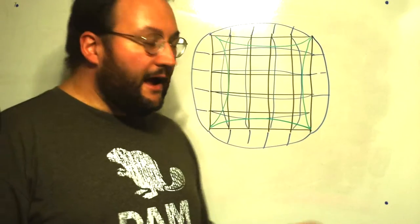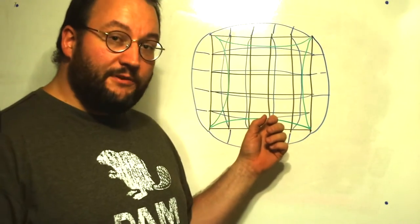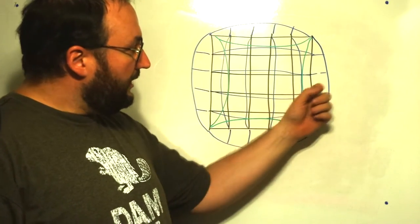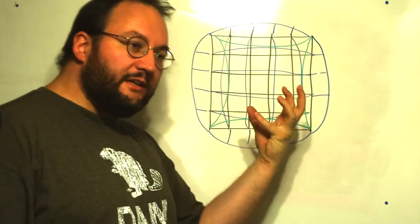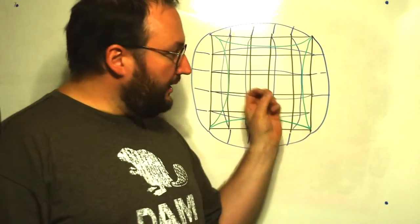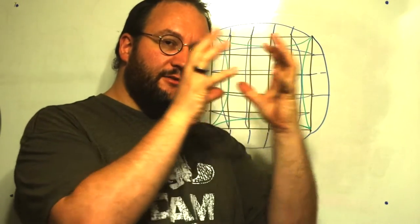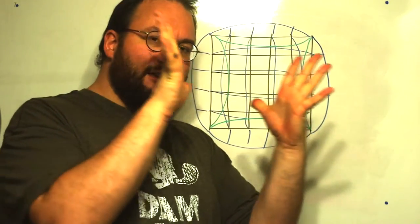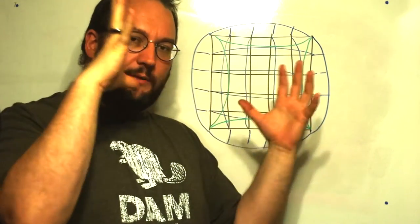Pin cushion is exactly the opposite. Again, this is really highly distorted, but the green lines represent the pin cushion, where the outside, where everything is kind of pulled in towards the center. Barrel distortion looks like your grid is exploding. Pin cushion looks like your grid is imploding, being pulled inward.